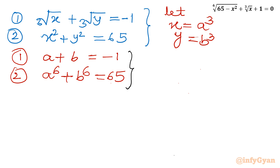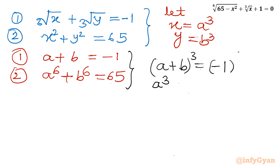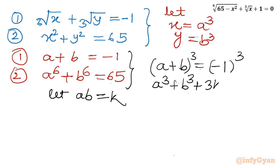From equation 1, a plus b equals negative 1. I will take cubing of both sides. So a cubed plus b cubed plus 3·ab·(a plus b) equals negative 1 cubed equals negative 1. Let me call ab equal to K. So a cubed plus b cubed plus 3K times (a plus b) equals negative 1. Since a plus b equals negative 1, we get: a cubed plus b cubed equals 3K minus 1.